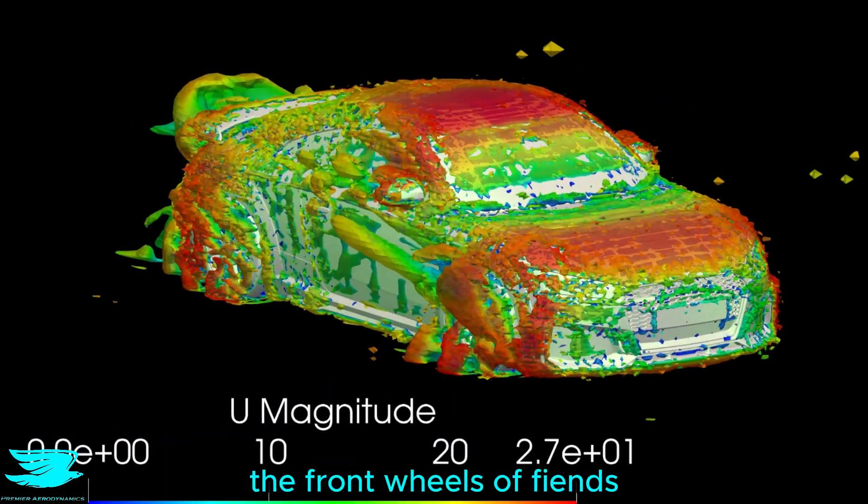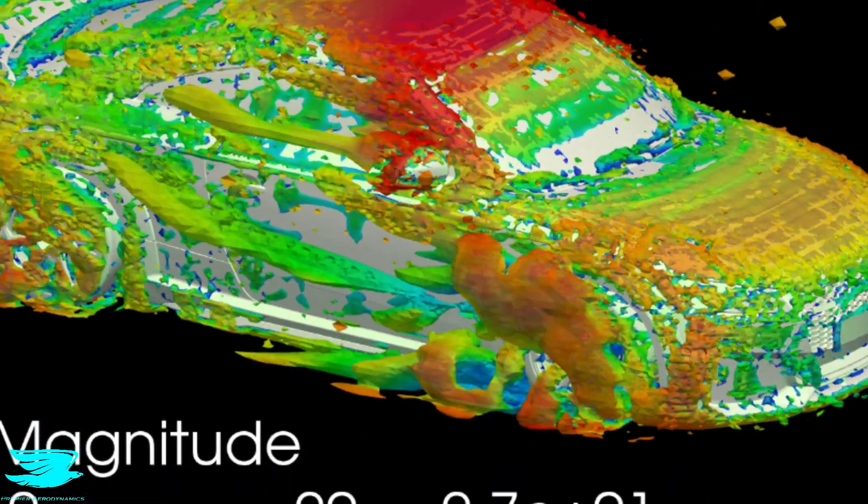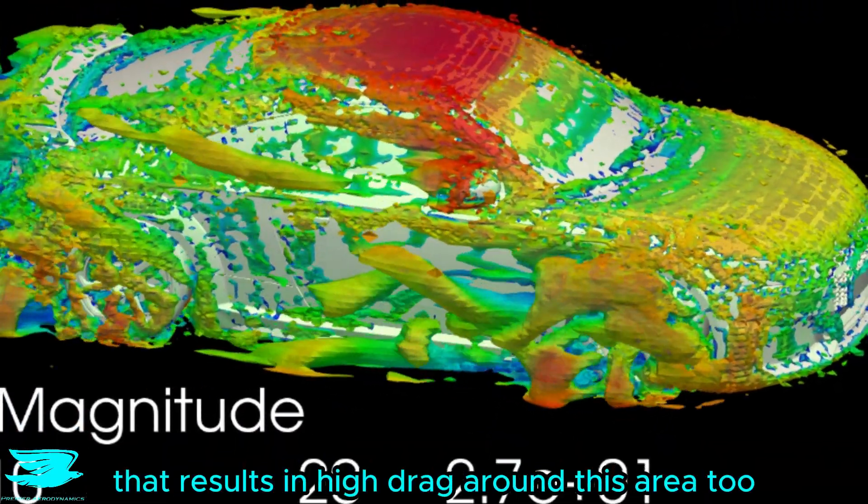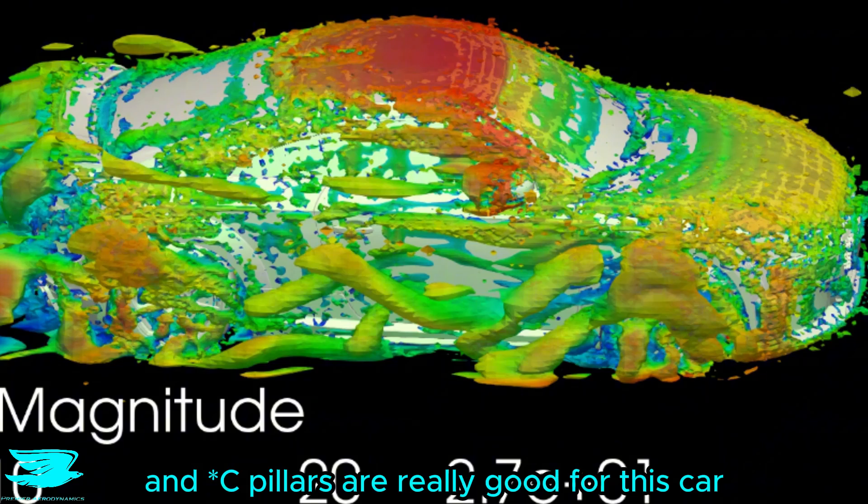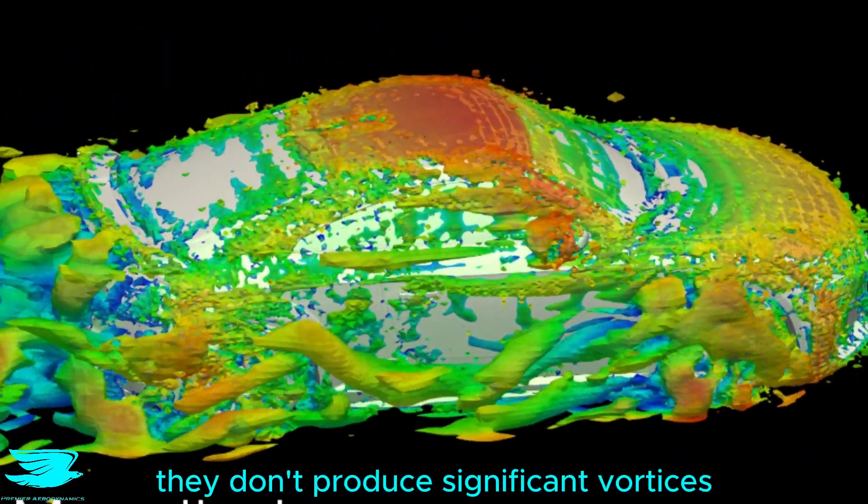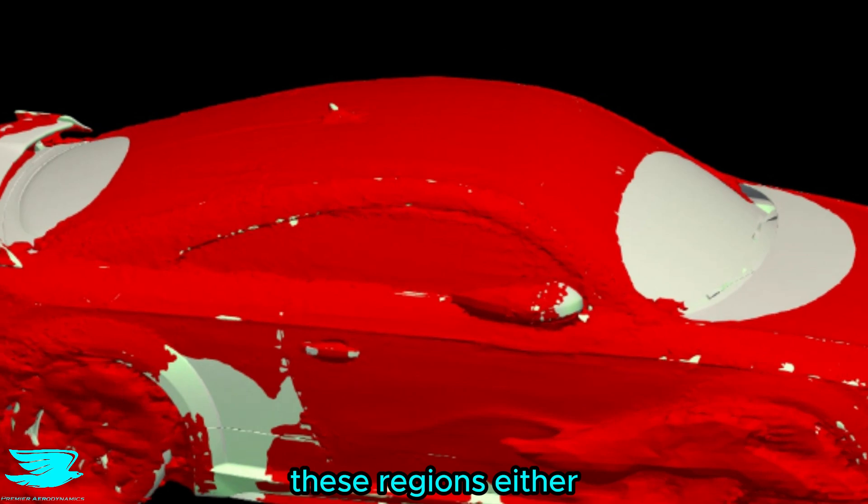Looking at the vortices, the front wheels are fiends, with bottom and top vortices forming. That results in high drag around this area too. The A-pillars and low pillars are really good for this car. They don't produce significant vortices, which results in no drag from these regions either.